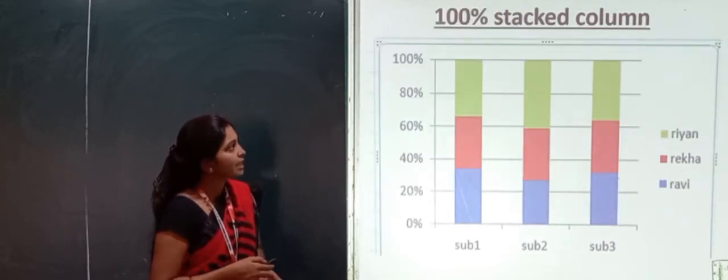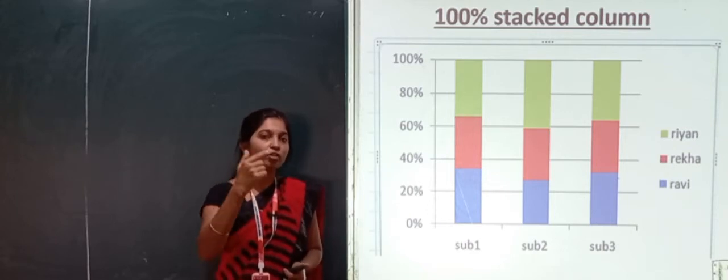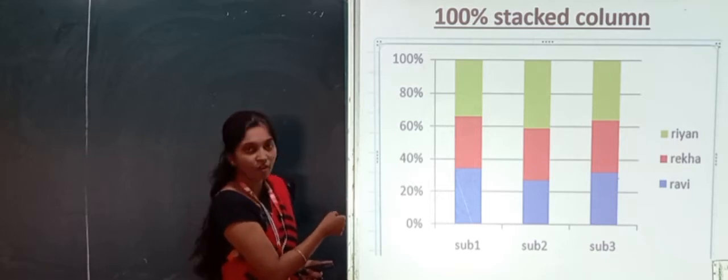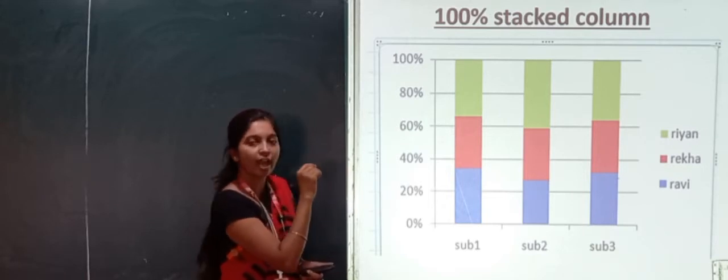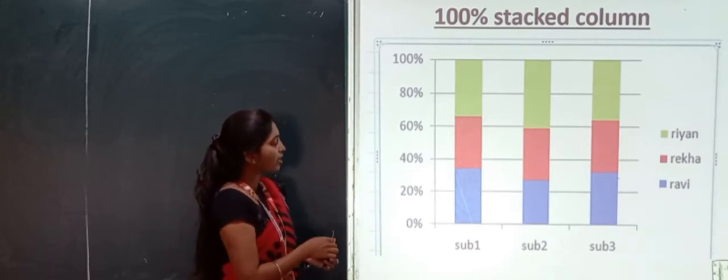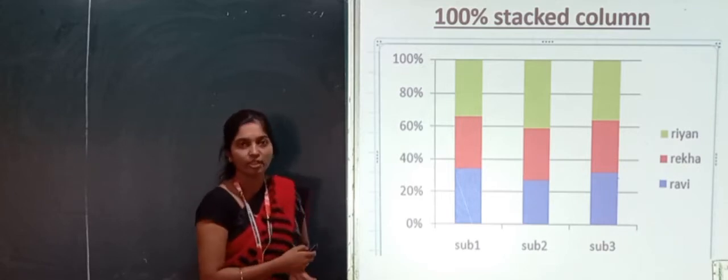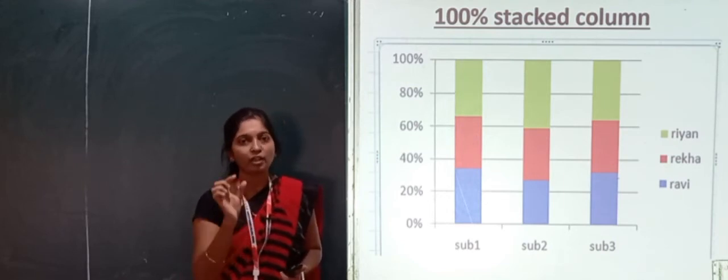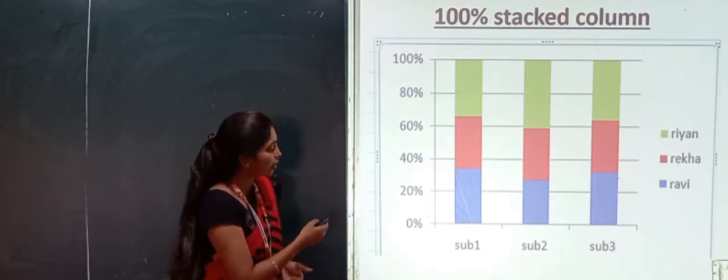The next one is hundred percent stacked column. Look at the stack, one data item is stacked one above another. The blue color represents Ravi's marks for subject one. And the red color for Rekha's marks. And the green color for Riyan marks. Stacked. 100% stacked represents marks in percentage wise, not by marks. 0%, 20%, percentage wise it represents. That's why it is called 100% stacked. One item, particular data, the comparison is shown in stacked form, percentage wise.